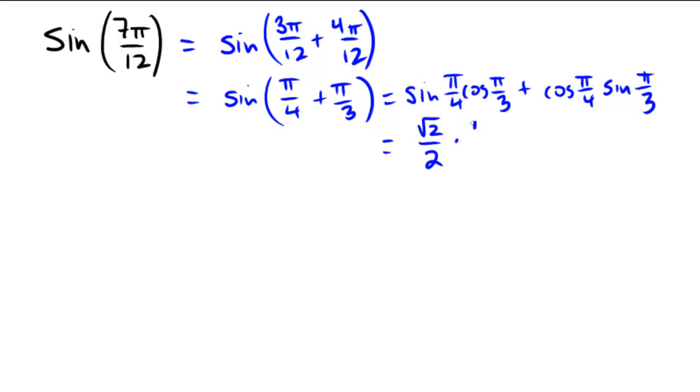That would be 1 half plus the cosine of pi over 4, which is radical 2 over 2. And then the sine of pi over 3, that's up high. So that's radical 3 over 2.